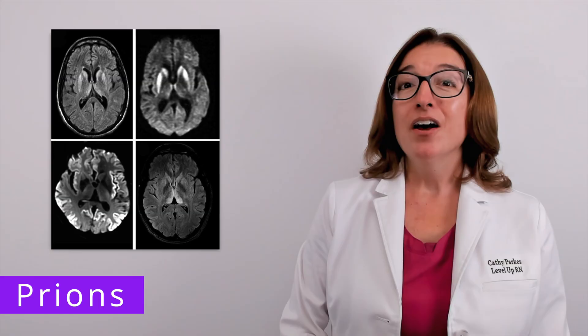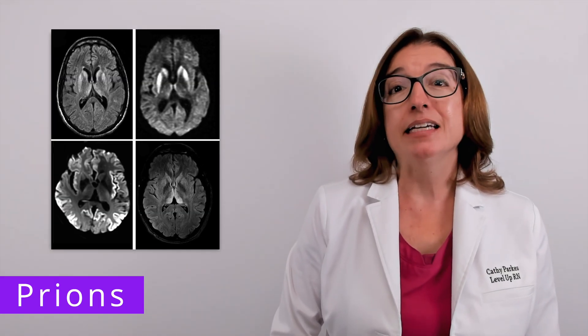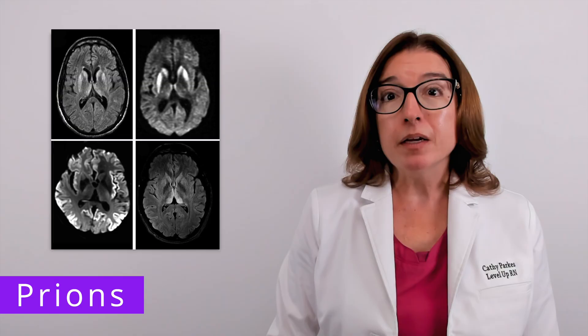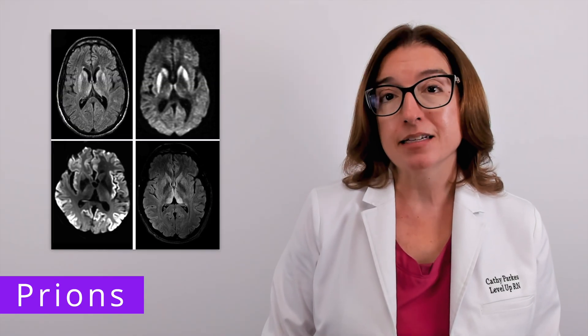When an animal or human becomes infected with a prion, those misfolded proteins form clumps in the brain called plaques. Those plaques interfere with communication between nerve cells, which causes issues with cognition and movement, as well as personality changes. Ultimately, prion disease leads to brain degeneration and death. There is no treatment or cure for prion diseases.